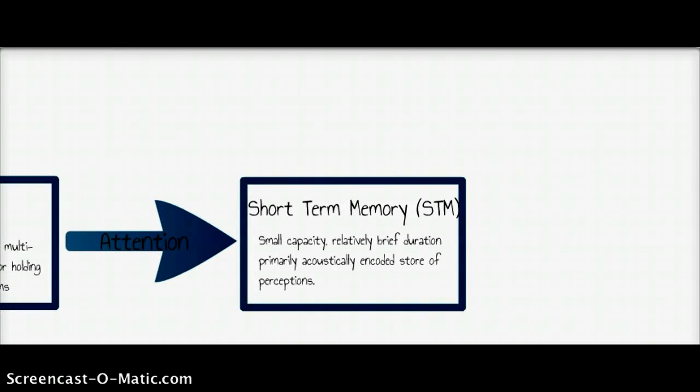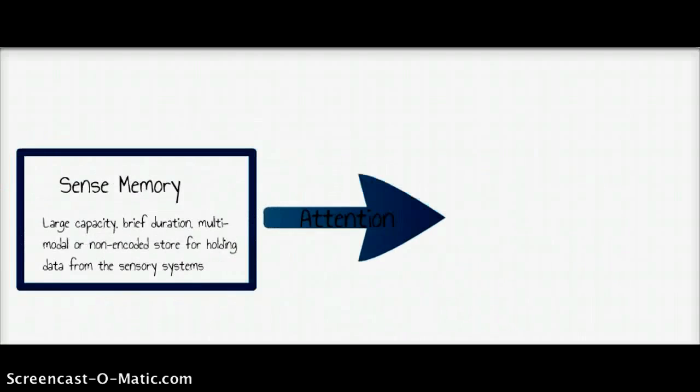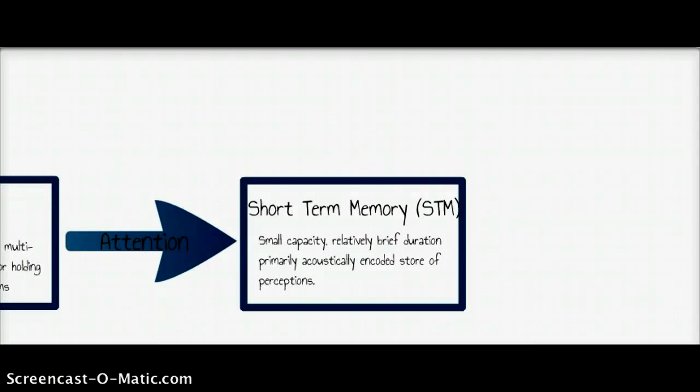Now short-term memory is clearly a small capacity store relative to the amount of stuff that we had going on in sense memory. Short-term memory has got to be smaller in capacity because we've paid attention to some and dropped a hell of a lot else. So the small capacity is explained because attention is essentially a filtering process.